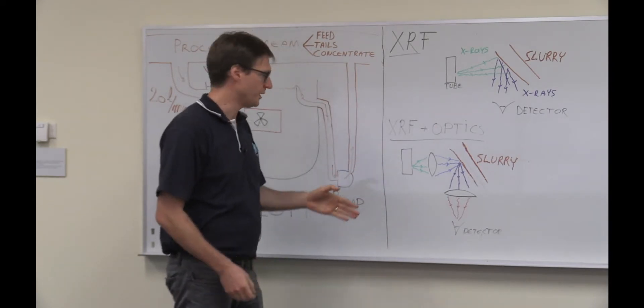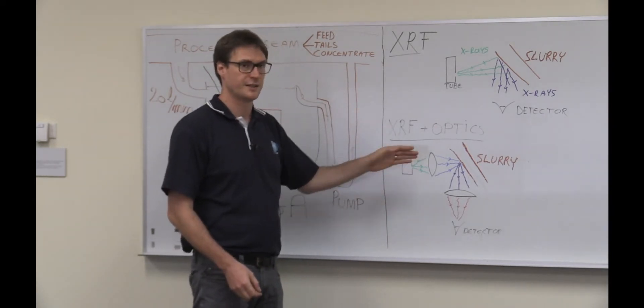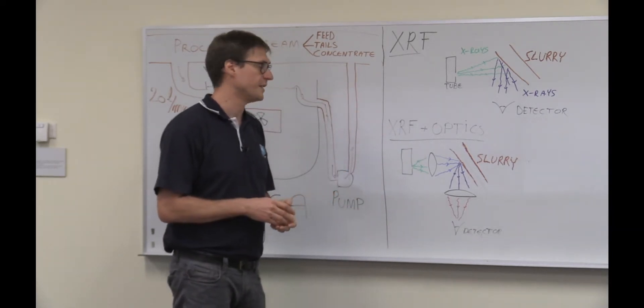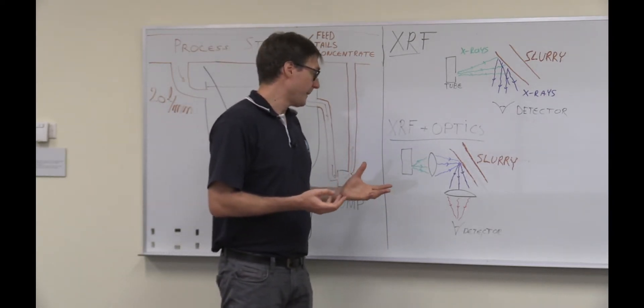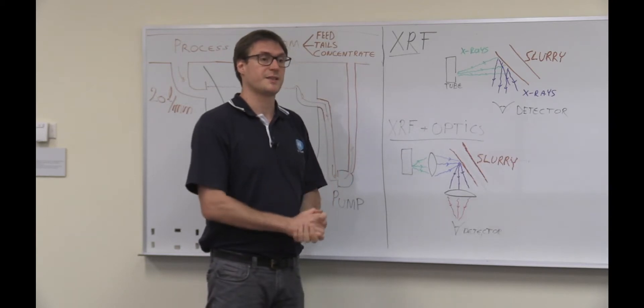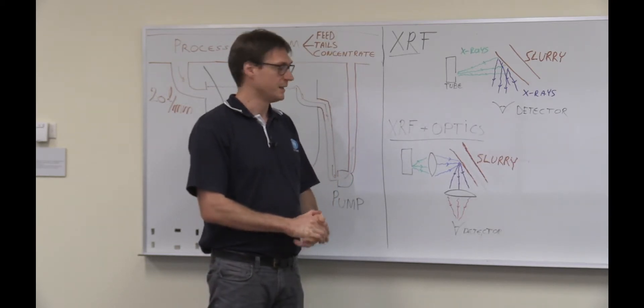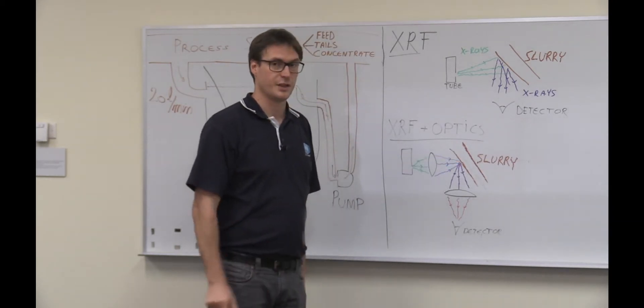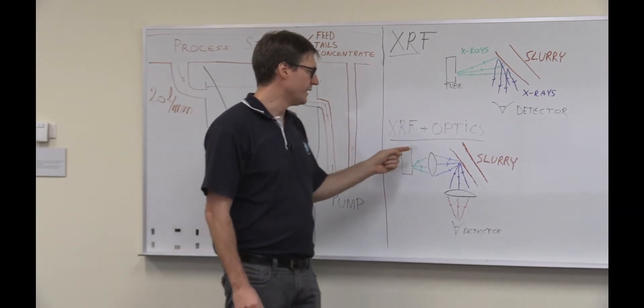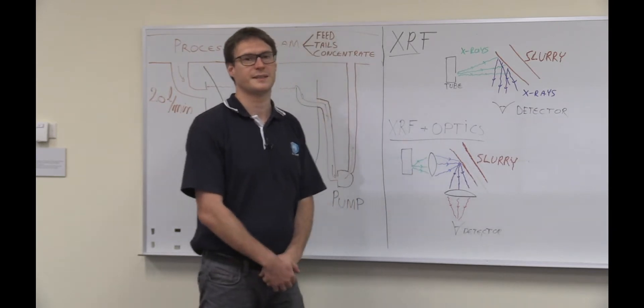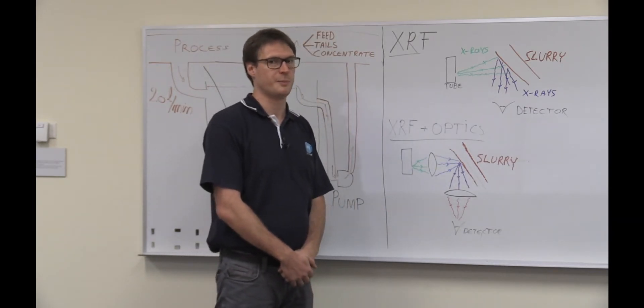So the setup is similar. You have an X-ray generator that generates X-rays at a lot of different energies, and then you have the first optic, which works as a lens. So it collects X-rays over a large solid angle and focuses them down to a point on the slurry. And at the same time, it only does this for one particular energy, and the X-ray energy we choose is the one that excites gold atoms the best.